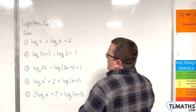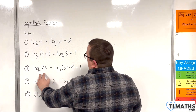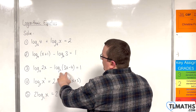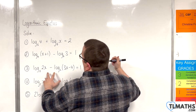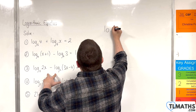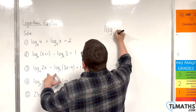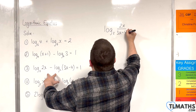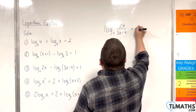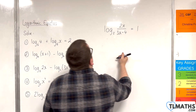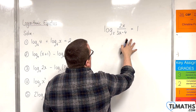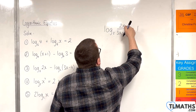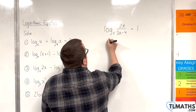Number 3: we have log base 2 of 2x take away log base 2 of (3x minus 4) is equal to 1. Use the quotient rule on the first two terms: log base 2 of (2x over (3x minus 4)) is equal to 1. Now convert from logarithmic form to exponential form — 2 to the power of 1 will be 2x over (3x minus 4).